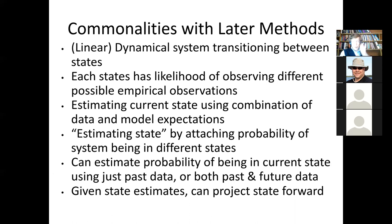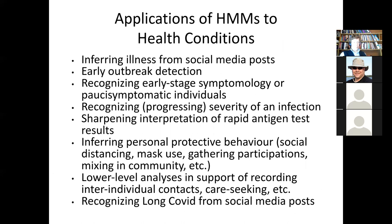We're estimating the state by attaching a probability of being in one state or another, in light of the observations to this point, along with the model structure. We can estimate the probability of being in the current state given all data until now. But we might also want to look retrospectively and say what was the state at some earlier time. And finally, given state estimates, we can project the system forward.